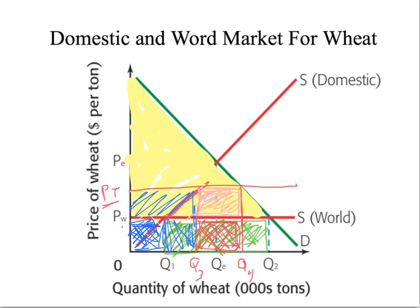This area over here is lost to consumers — this area of consumer surplus is lost — and this is representative of what you call deadweight loss, a loss of welfare as a result of the tariff.